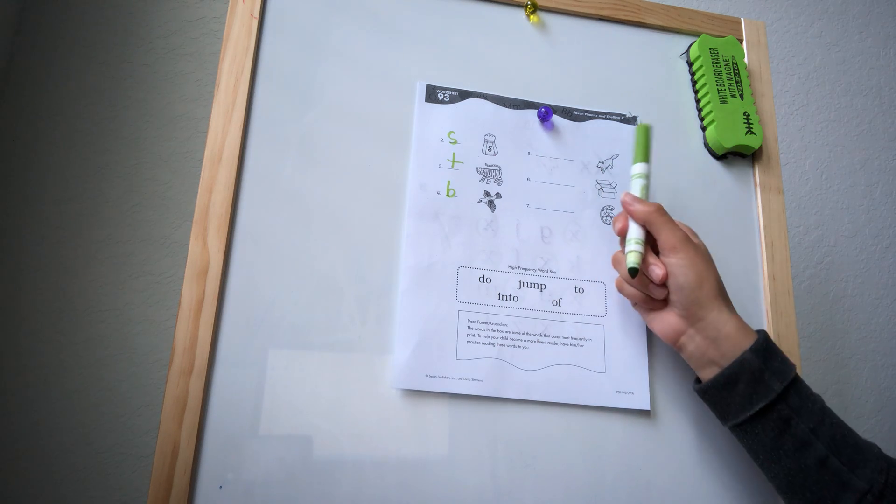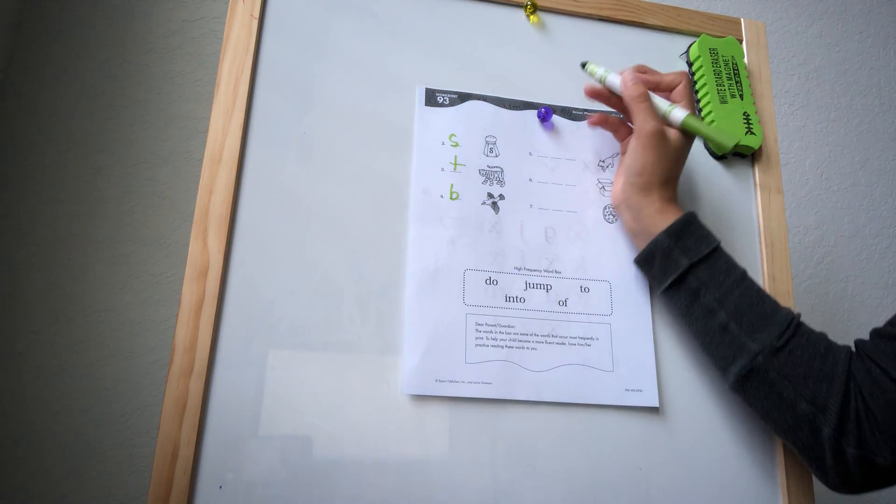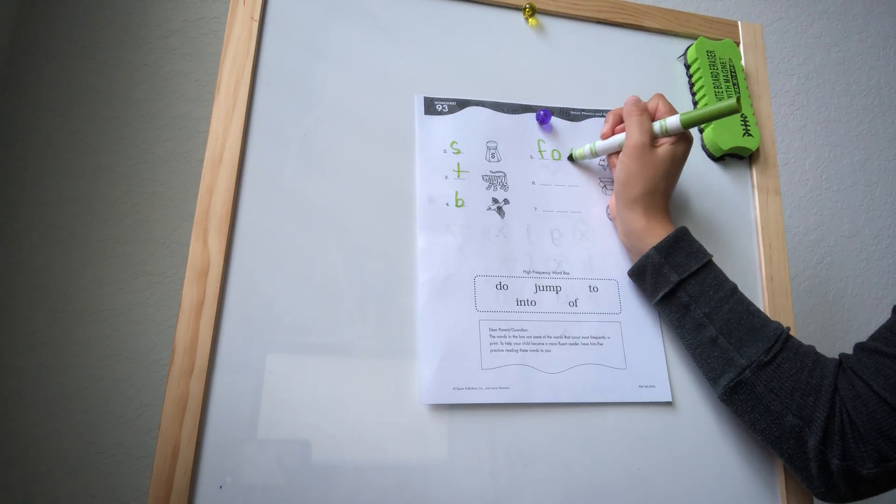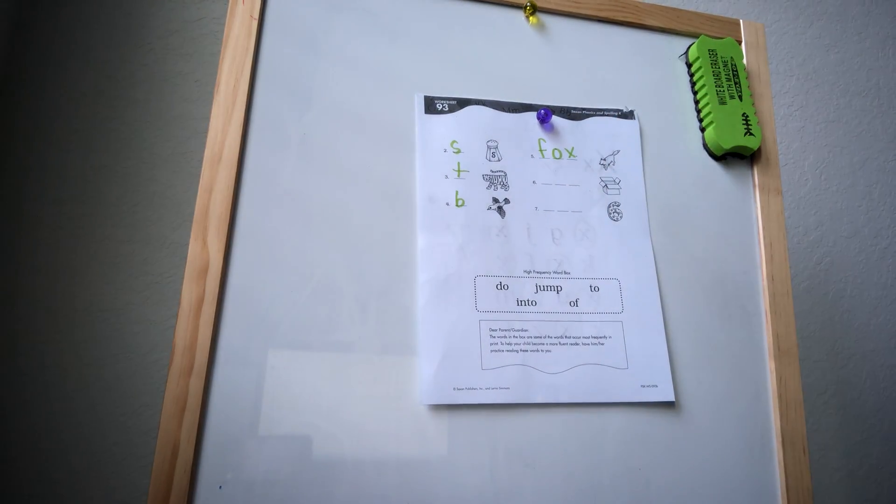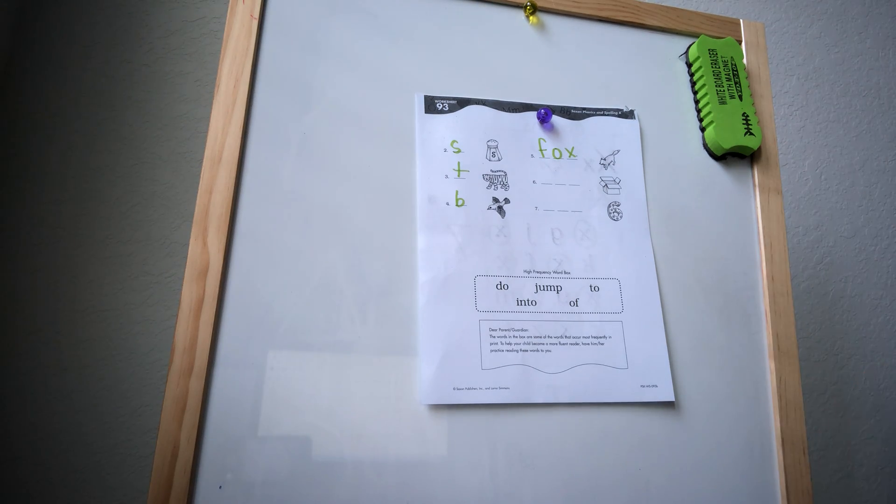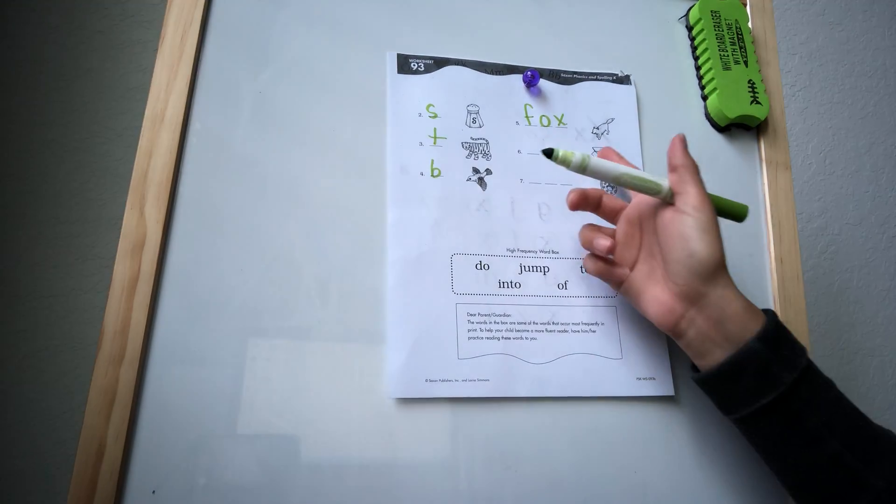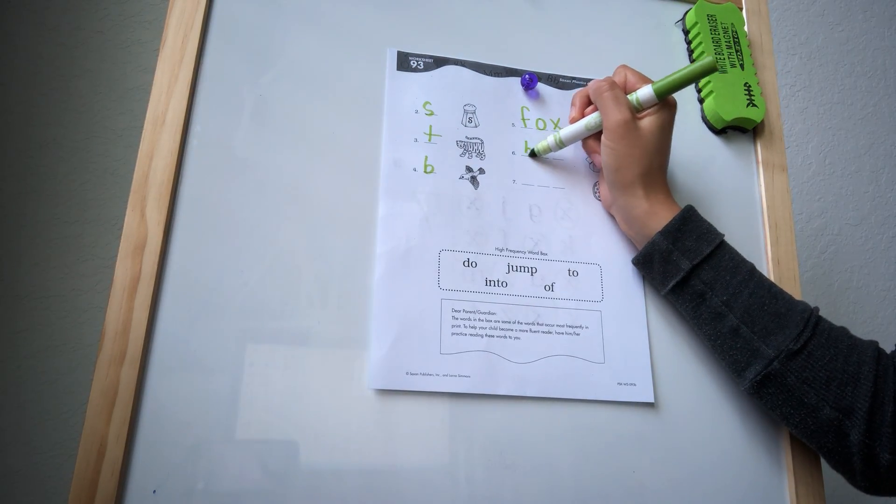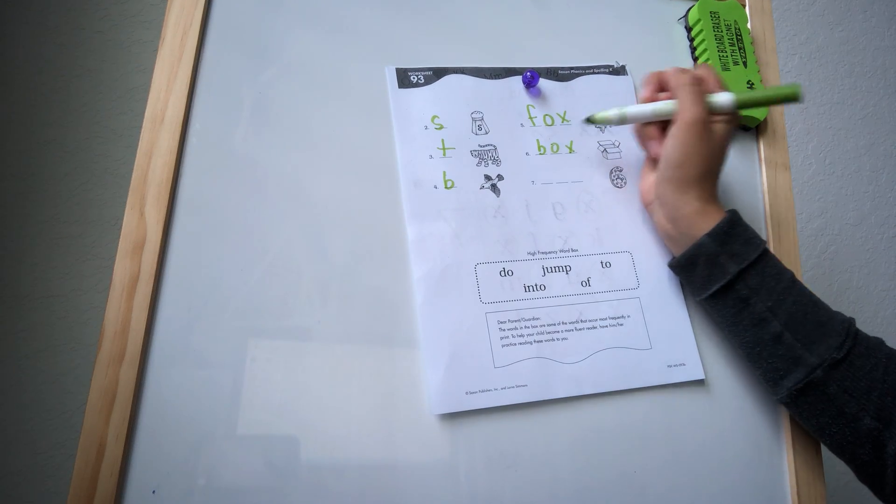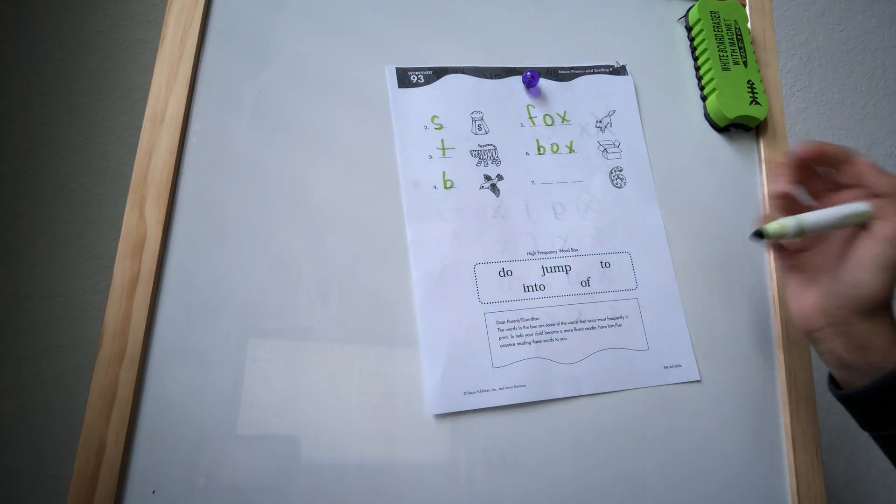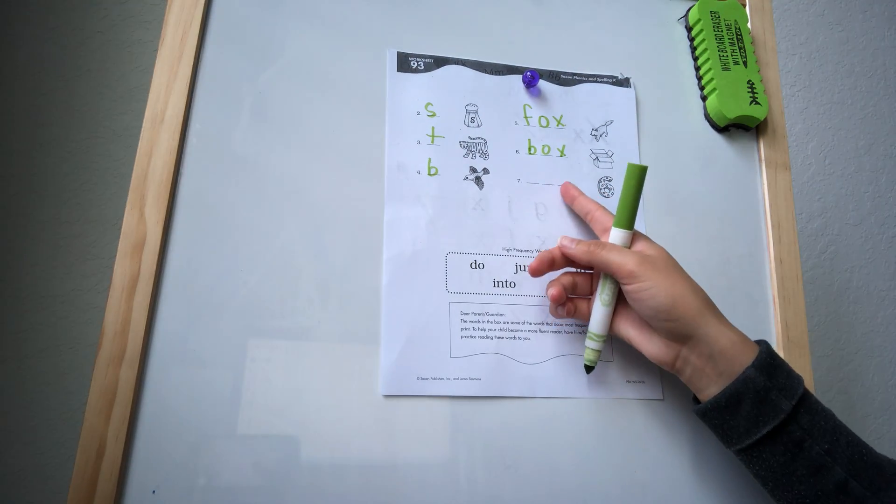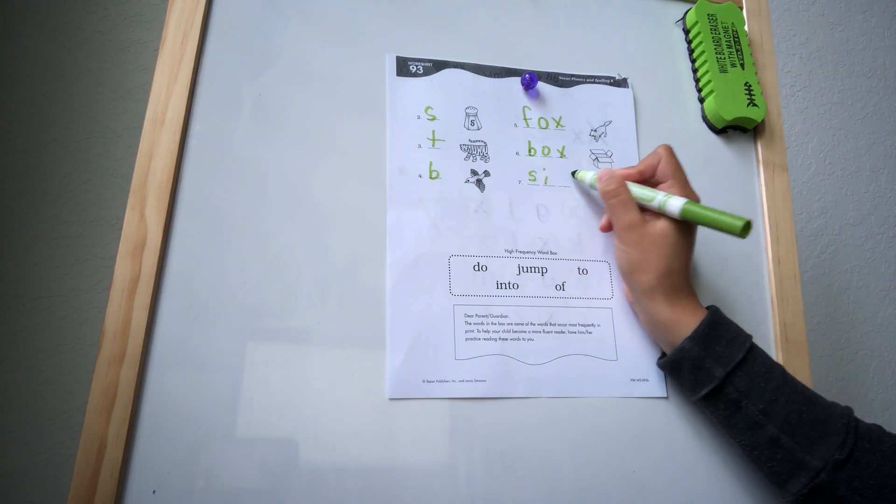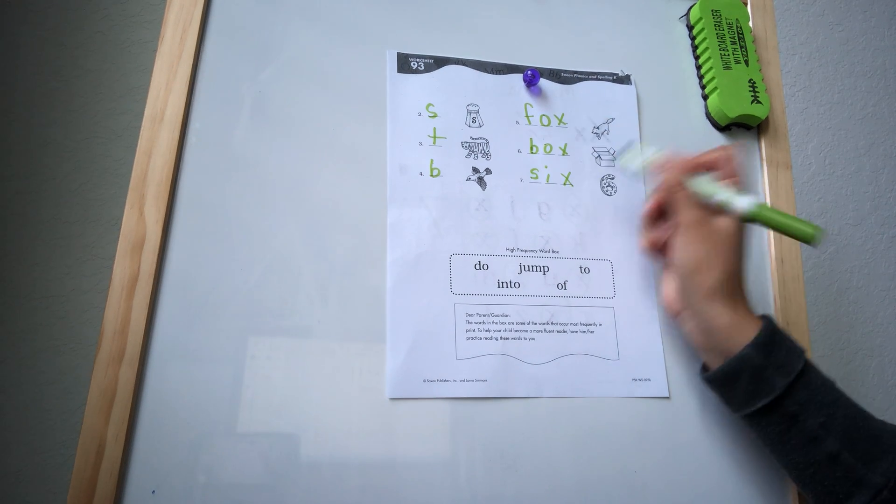Okay. Now we have to sound out the picture. So that's a fox. Let's sound it out. F, F, F, O, O, X. That's our new letter. X. And number seven, that's a box. I mean, number six is a box. So, B, O, X. And number seven is a six. S, let's sound it out. S, I, X. So they all end in the X sound.